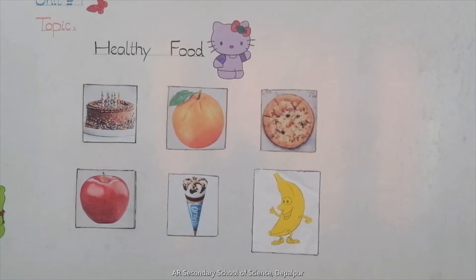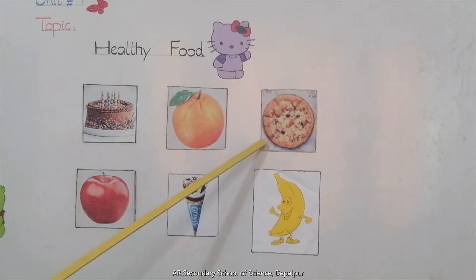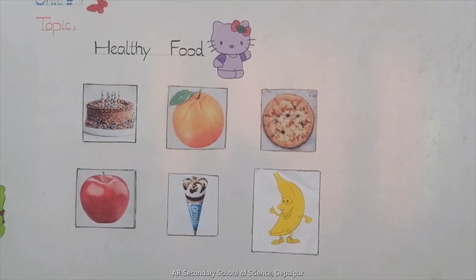Some food that is not good for us — these we call unhealthy food. For example: cake, pizza, ice cream. ये सब चीज़ें हमारी भूख तो कم करती हैं मगर इनसे हमें फ़ायदा नहीं होता, और निसलसल खाने से हम बीमार हो जाते हैं — इन्हें हम unhealthy food कहते हैं।